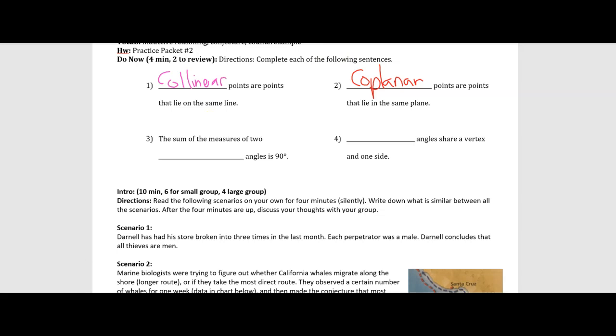Number three says the sum of the measures of two blank angles is 90 degrees. So this goes back to last unit. Complementary angles should sum to 90 degrees. Number four, blank angles share a vertex and one side. This would be adjacent.